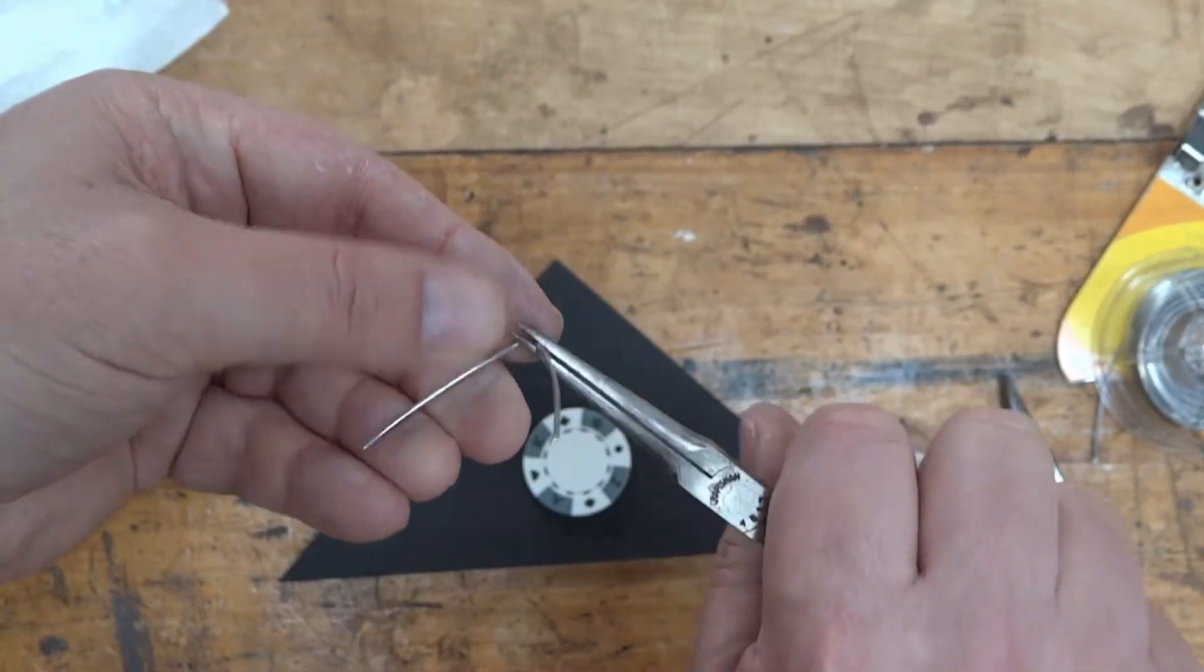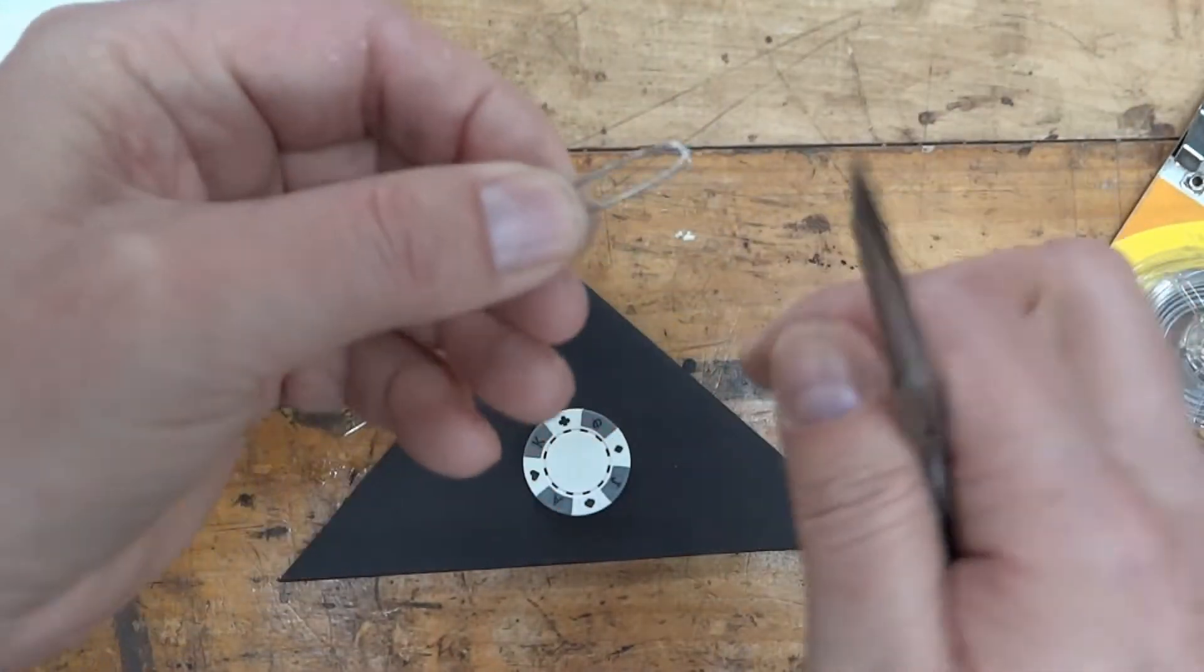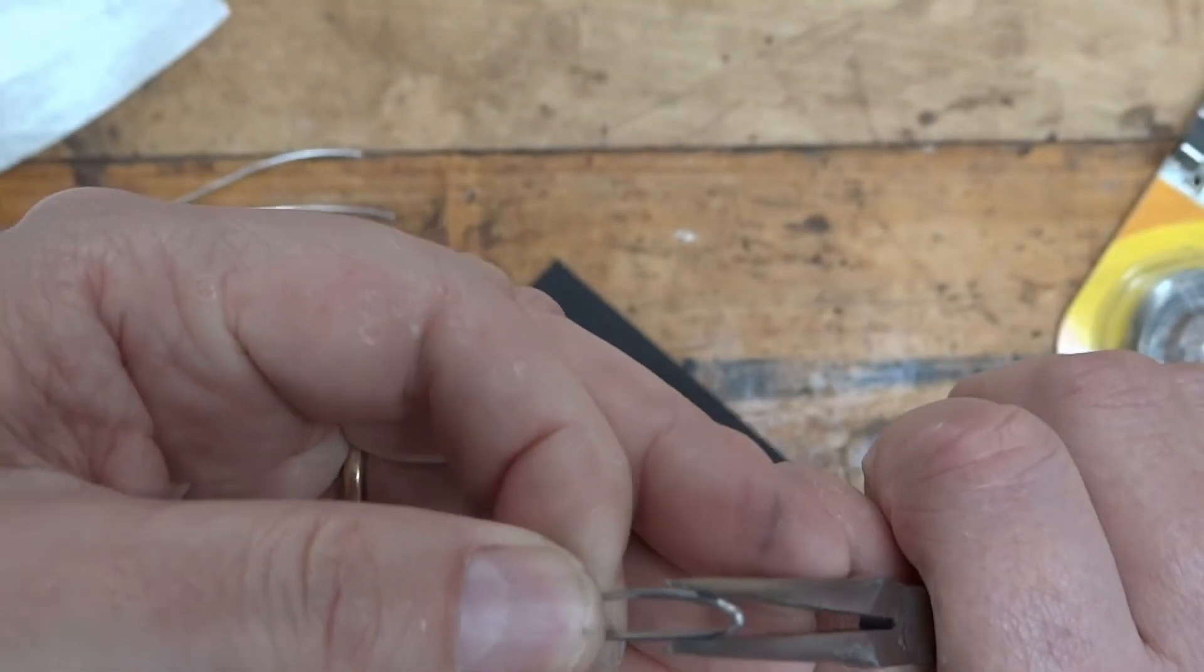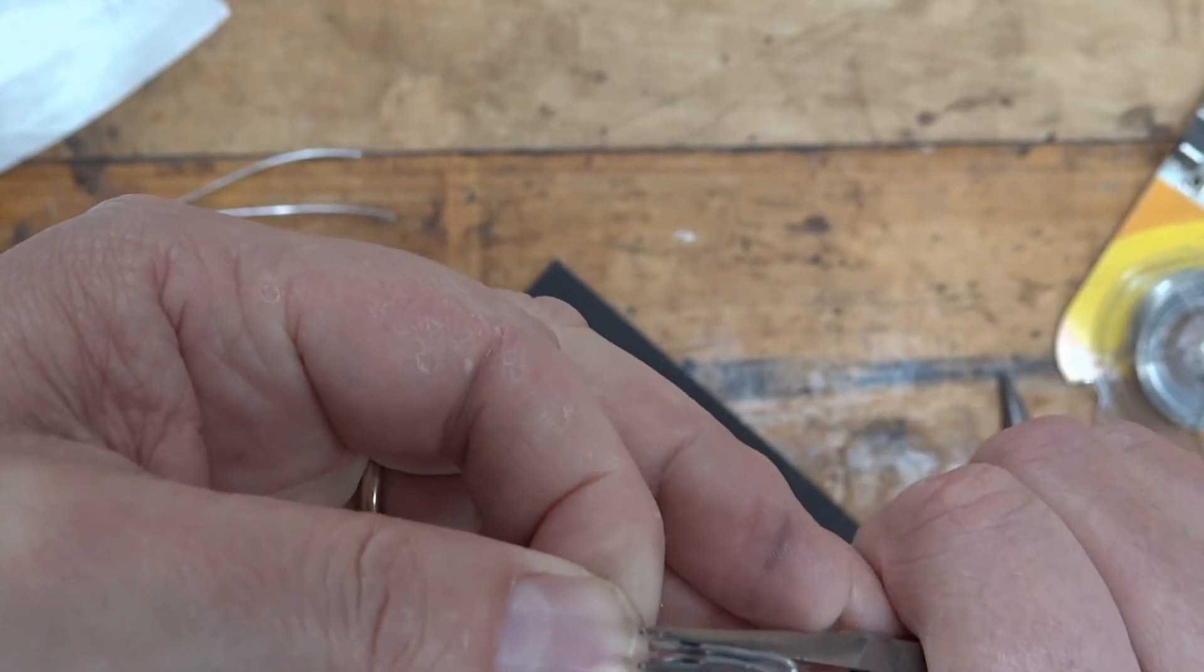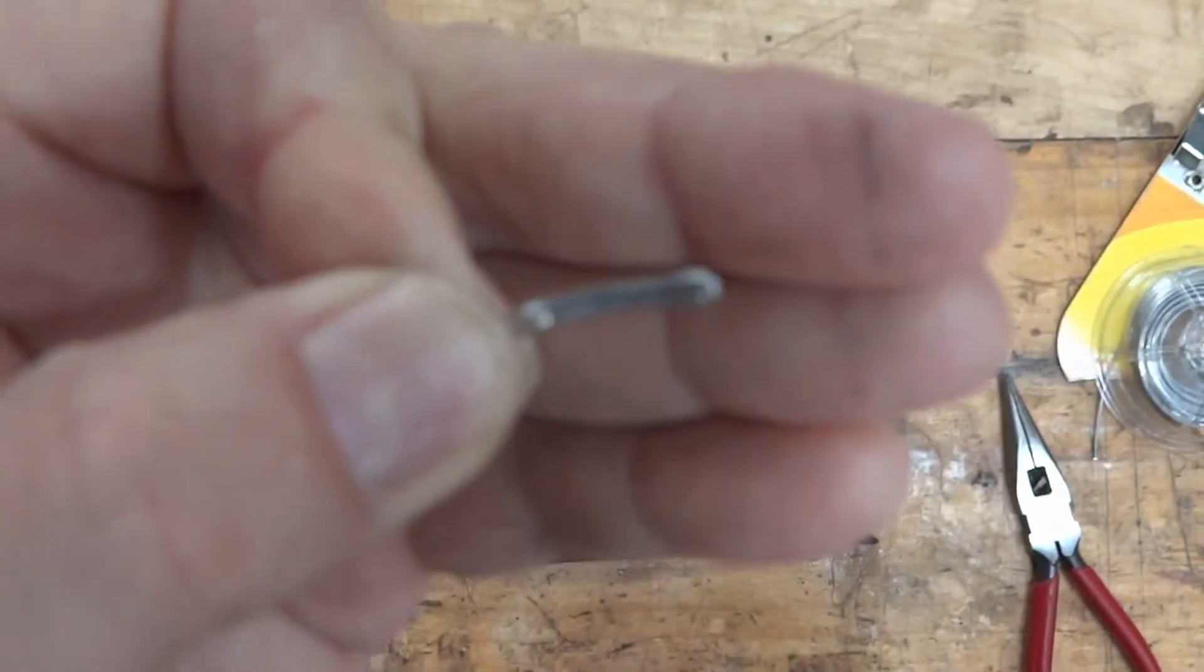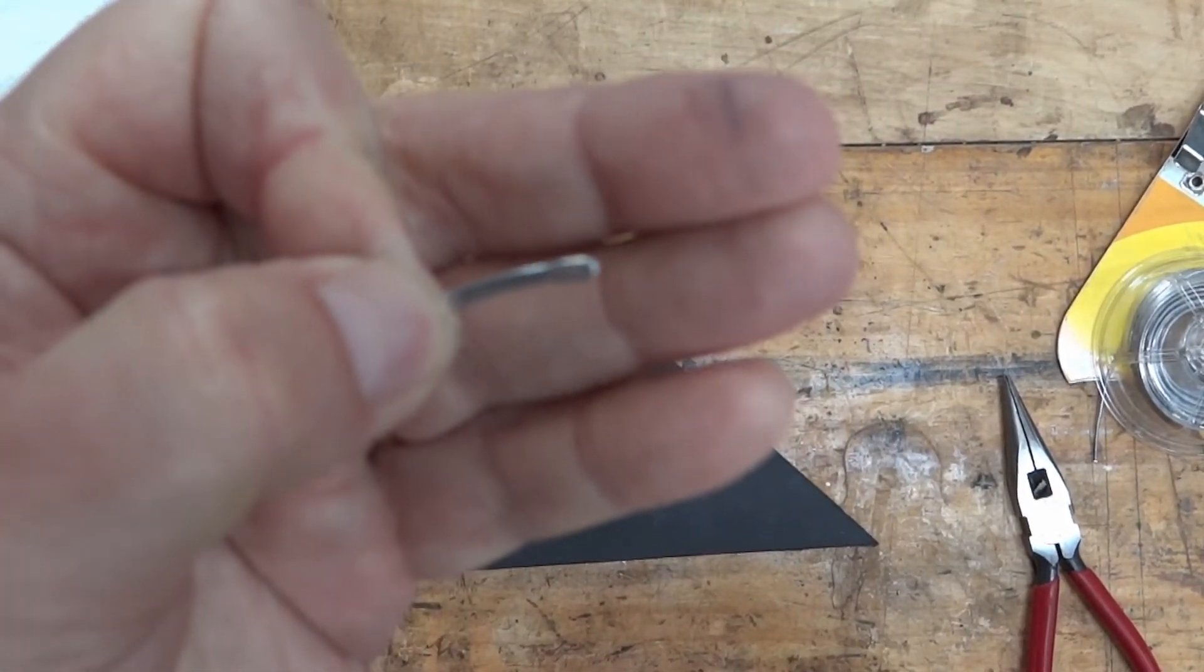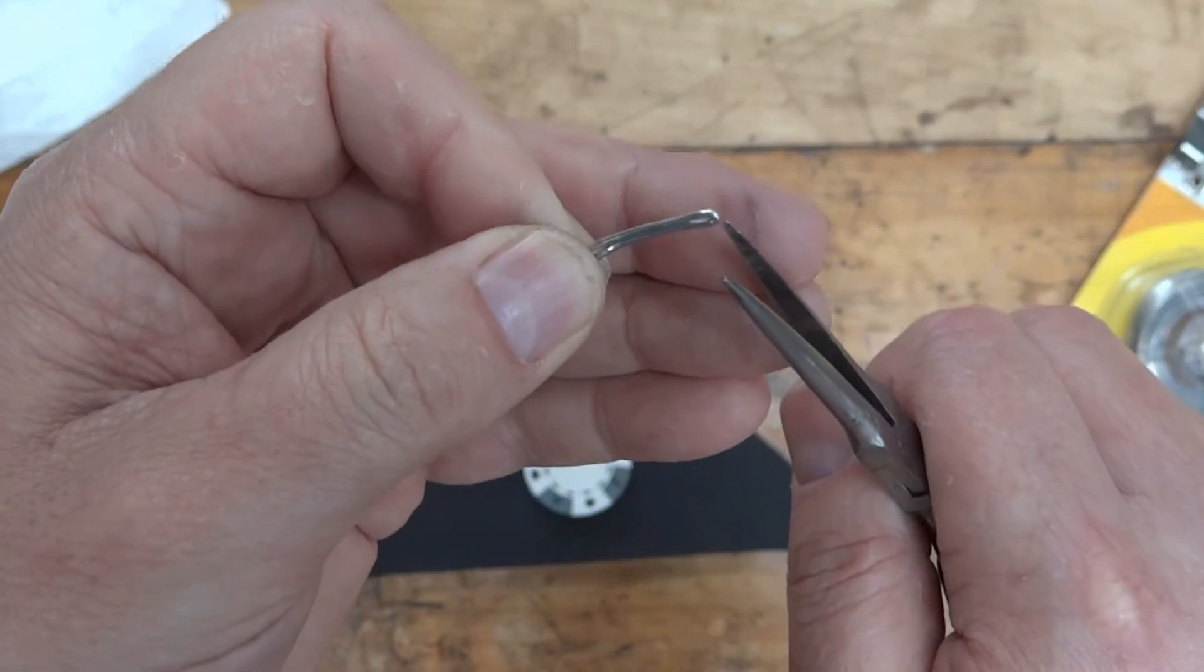First, bend it in half so you get something like that, and then I squeeze it together so you get something a little bit more tidy looking.